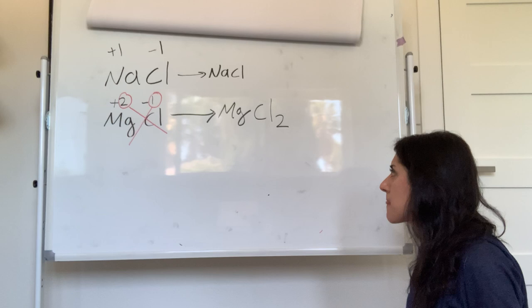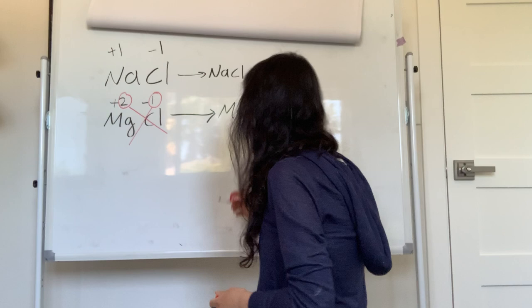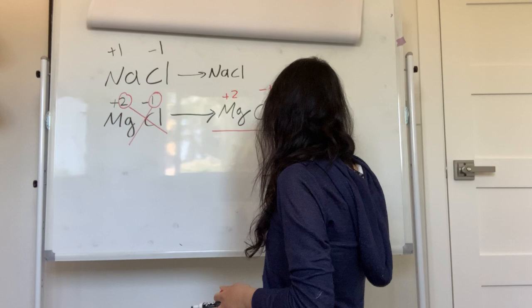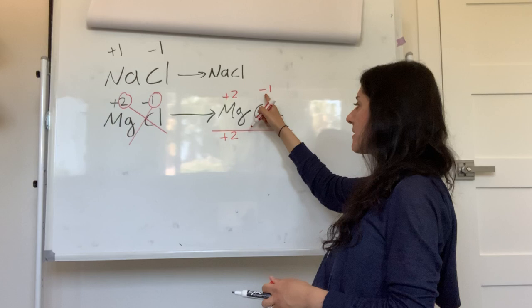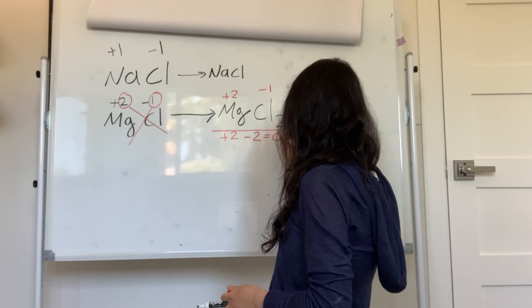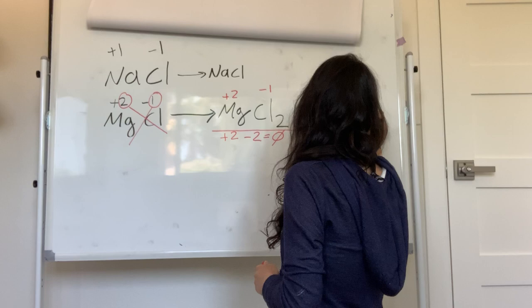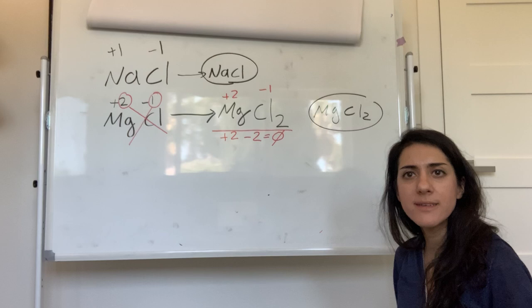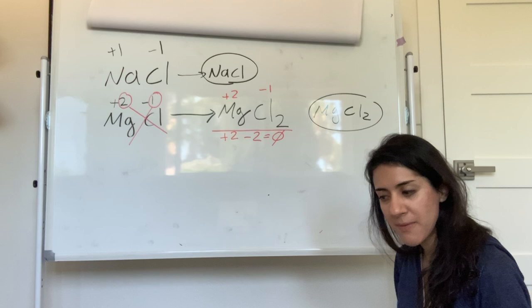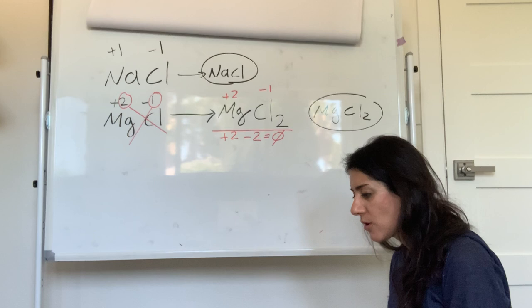Here's why we cross-multiply: the whole compound must be neutral. Mg is +2, and we have 2 Cl atoms each at −1, so −1 × 2 = −2. Plus 2 and minus 2 cancel — neutral compound. That's what ionic compound means: a balance of charges. MgCl2 and NaCl are both examples of that balance.